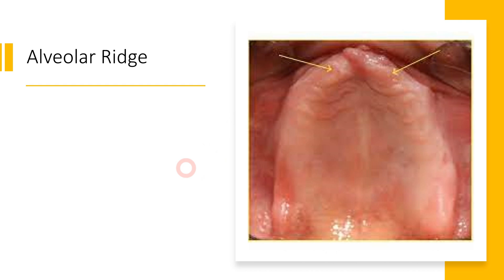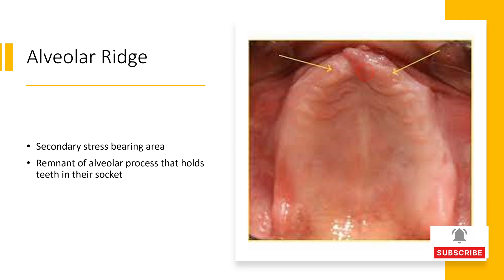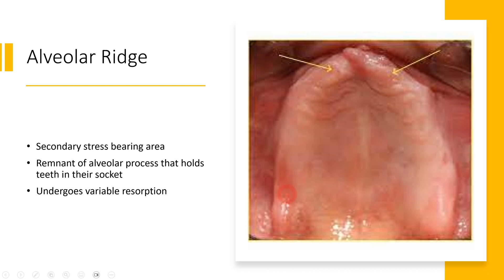After talking about the primary stress bearing area of the maxilla, let's talk about the secondary stress bearing area. As you can see in this clinical picture of an edentulous maxilla, the alveolar ridge is the secondary stress bearing area. The alveolar process, which holds the teeth when they are present, is a teeth-dependent structure. When teeth are lost, the alveolar process dissolves and leaves a remnant — these remnants form the alveolar ridge, which undergoes variable resorption. The crest of the alveolar ridge provides secondary stress bearing area for the intraoral prosthesis.